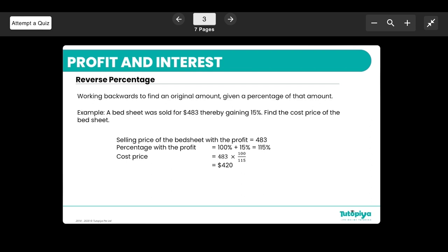So what we do is, unlike earlier when we were multiplying by the percentage over 100, here you have to multiply by 100 over the percentage. So that is 100 over 115, and when you simplify that you get $420.